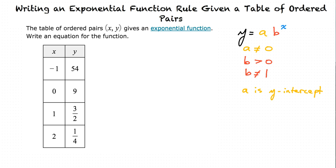I see in our table that we have the point (0, 9). That's the y-intercept. The y-intercept is given to us, which means that we know that a equals 9.